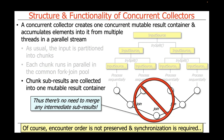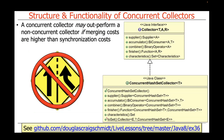We don't cover the ConcurrentHashMap in as much depth as it deserves in this course, but there's a companion course that goes into much more detail. A concurrent collector may outperform a non-concurrent collector in circumstances where merging costs are higher than synchronization costs. As N gets bigger and the overhead of merging for certain types of collections increases, we'd expect concurrent collectors to start outperforming non-concurrent collectors.